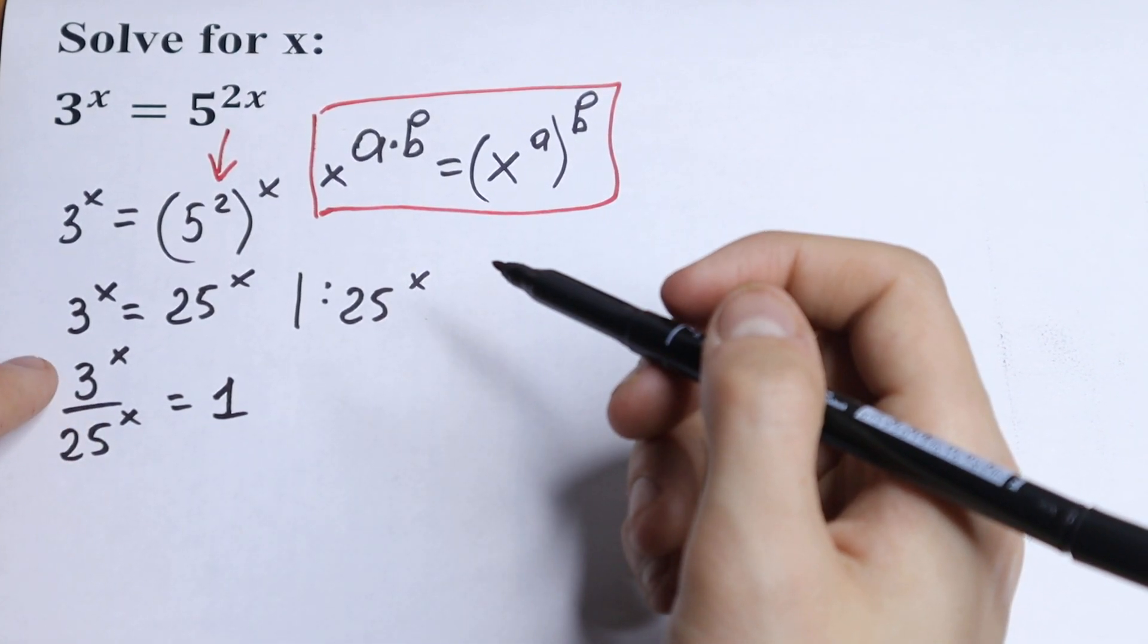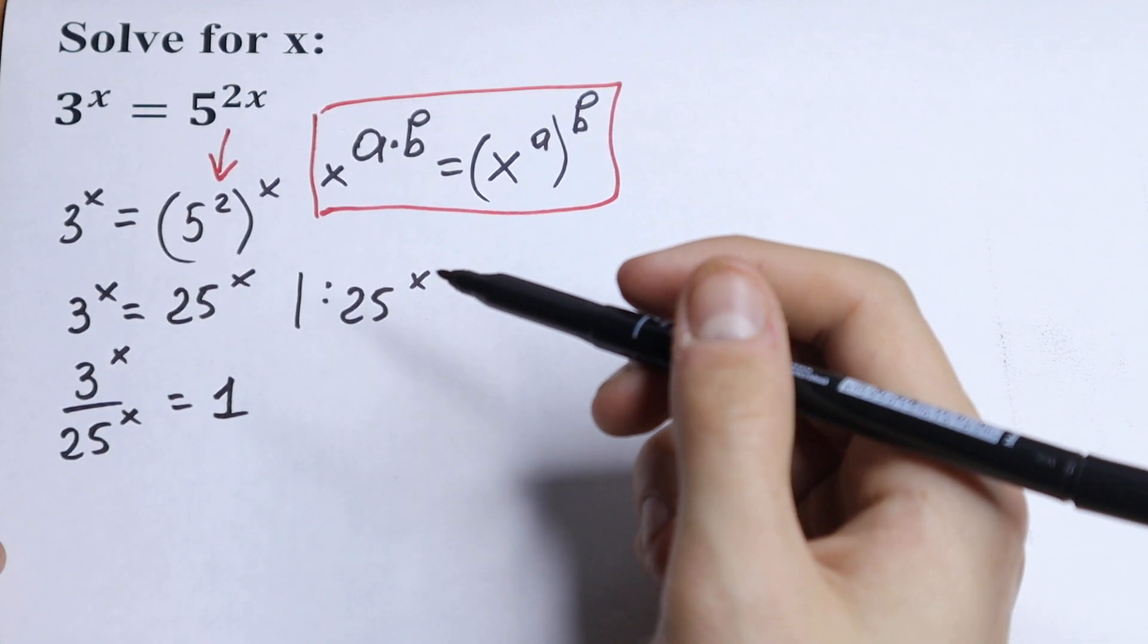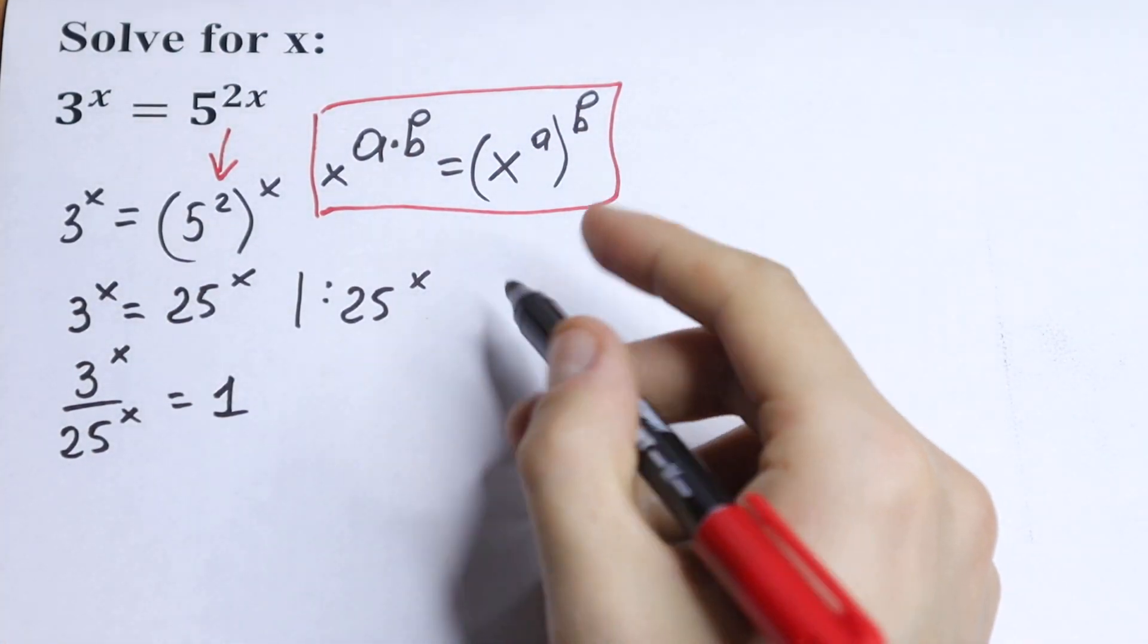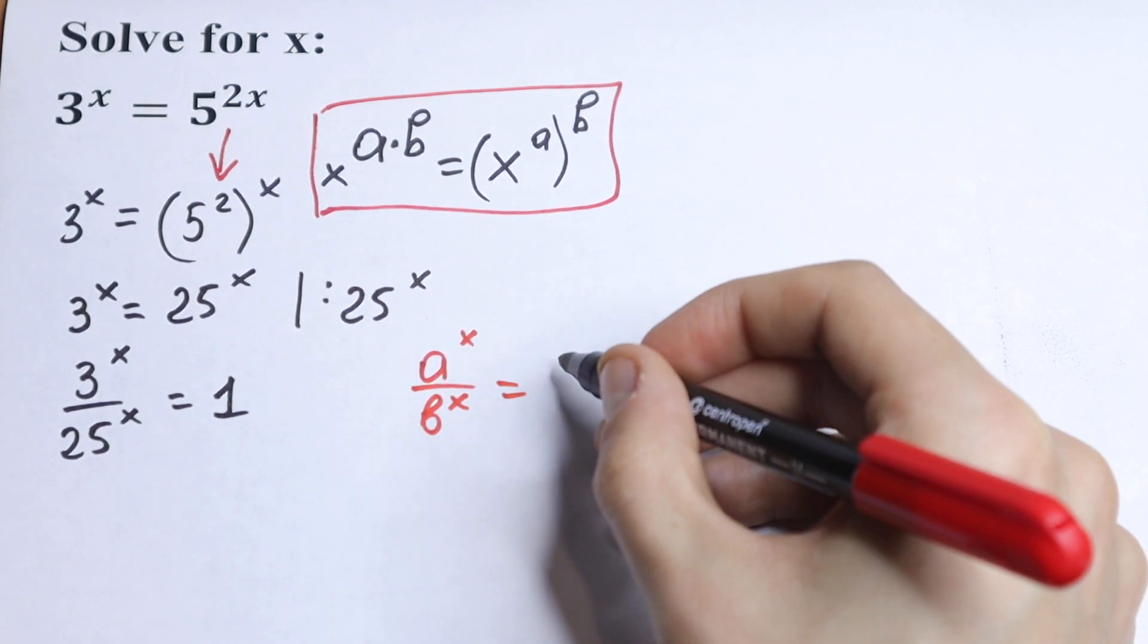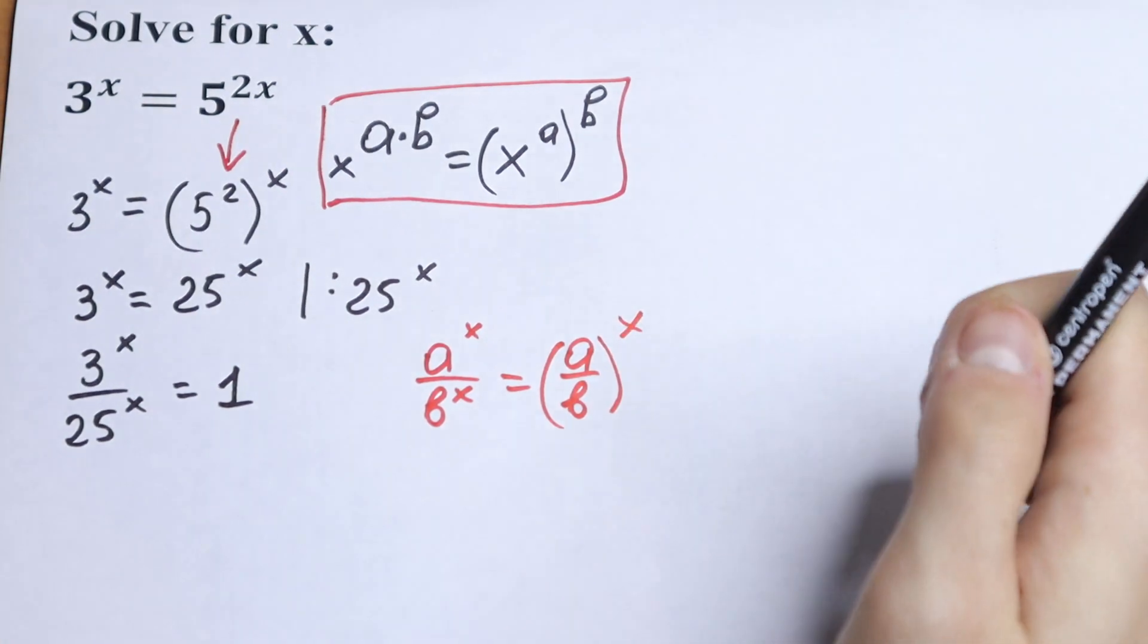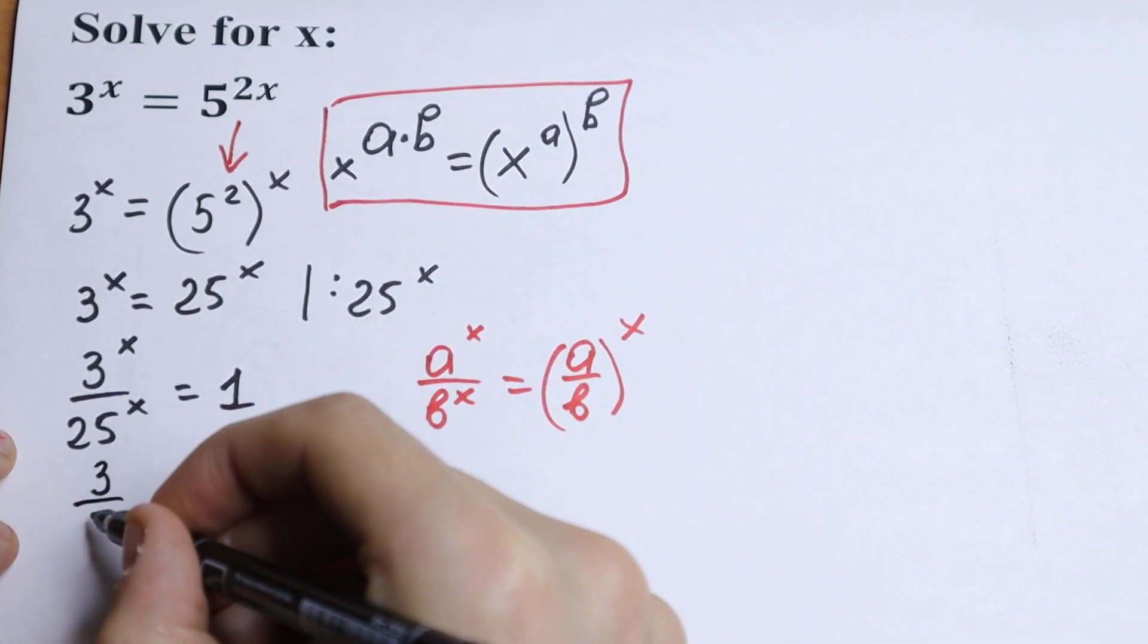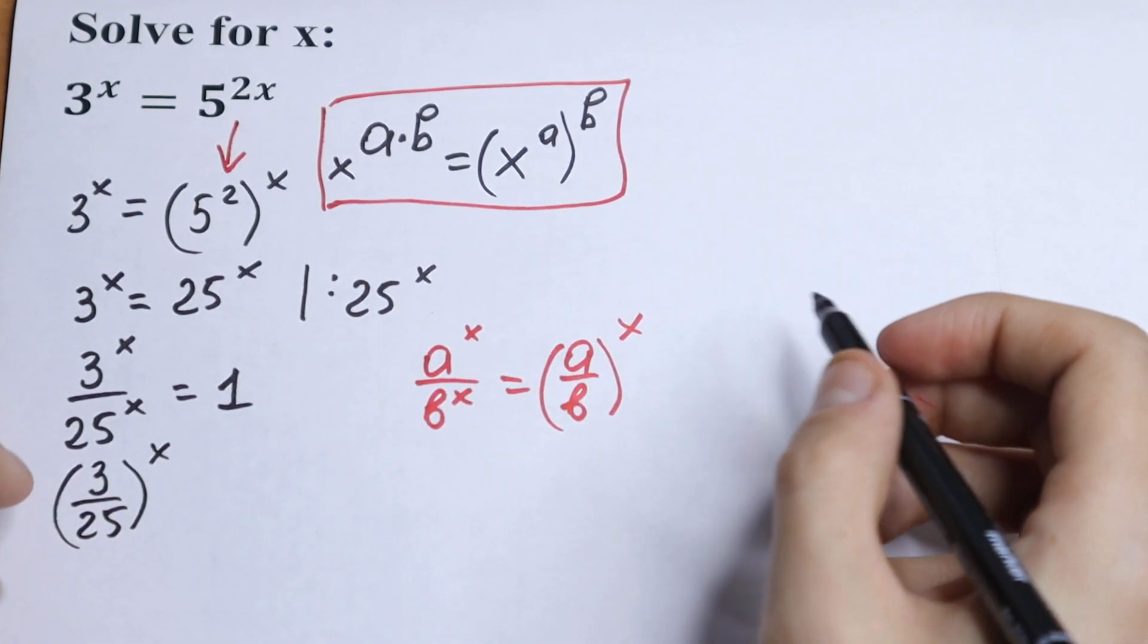So we have different bases but the same exponent right here. Of course we can write it in one parentheses. So the rule is: if we have a to the power x over b raised to the power x, we can write it as a over b raised to the power x. Really good rule because we write this as 3 over 25, all raised to the power x, equals 1.